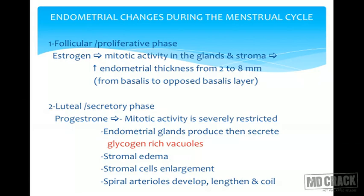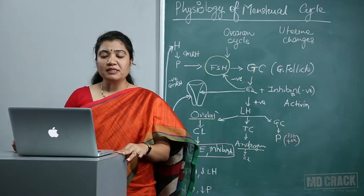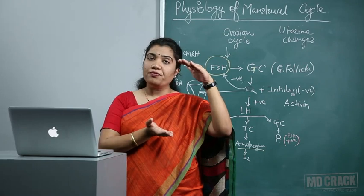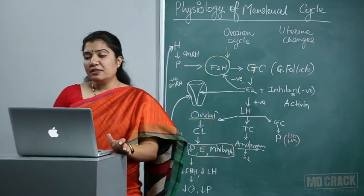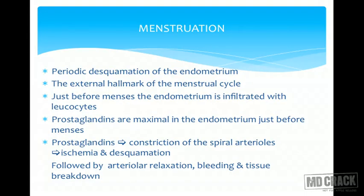In the luteal or secretory phase, progesterone acts on the endometrium. Mitotic activity is severely restricted. Endometrial glands produce and secrete glycogen-rich vacuoles — the appearance of these vacuoles is the first sign of ovulation, an important MCQ. Then stromal edema and stromal cell enlargement take place. Spiral arterioles develop and lengthen in the proliferative endometrium and then coil, as the growth cannot be accommodated. When estrogen and progesterone are withdrawn at the end of the secretory phase, there is vasoconstriction and desquamation of the endometrium.